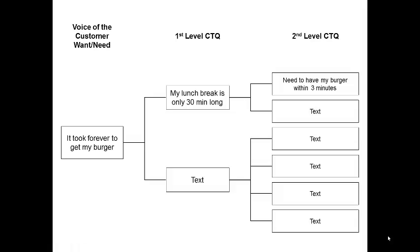In Lean and Six Sigma projects, it's really important to understand the needs of the customer. One of the tools you can use to identify critical needs of the customer is what's called a CTQ tree, or a critical to quality tree. What you see here is the initial voice of the customer. For example: 'It took forever to get my burger.' Well, that's not measurable, but it's important to identify this as a critical need of the customer.